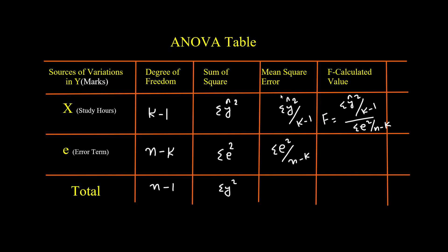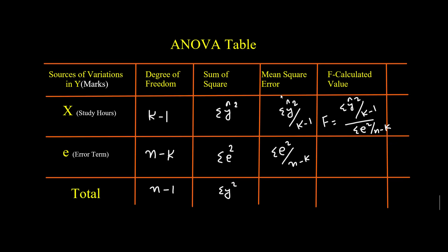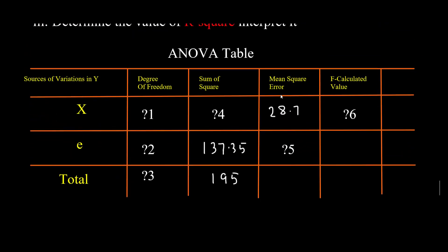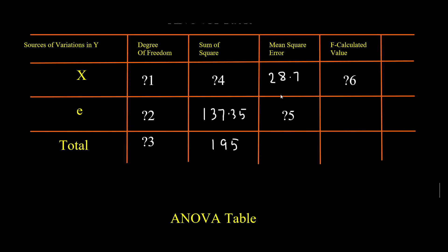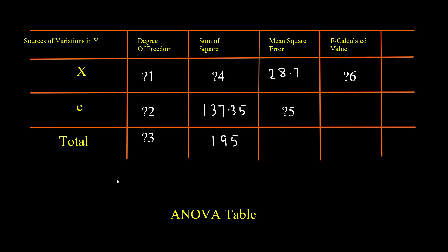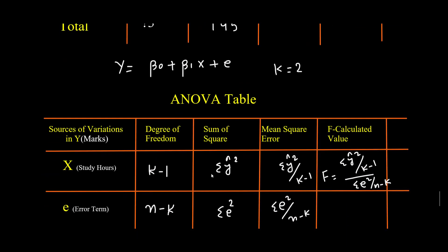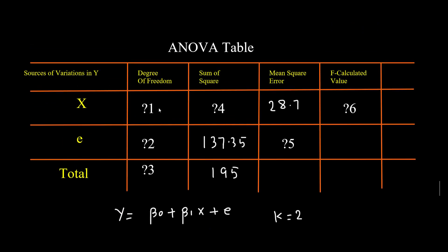Now, since this is simple linear regression, we estimate the model y = β₀ + β₁x + ε, which has two parameters: β₀ and β₁. The number of parameter estimates k equals 2. Therefore, the degree of freedom for the regression (k minus 1) equals 2 minus 1, which is 1. So question mark 1 is equal to 1. We are done with the first missing value.